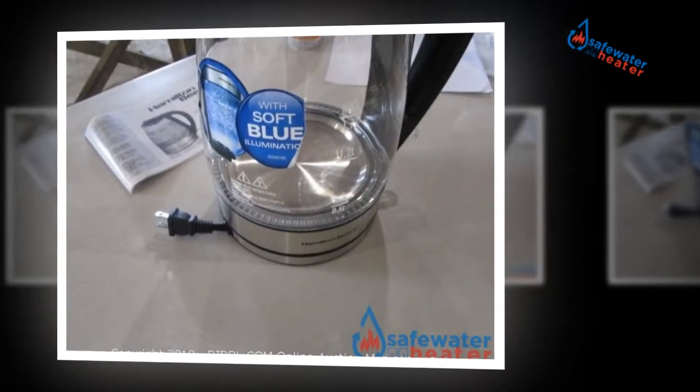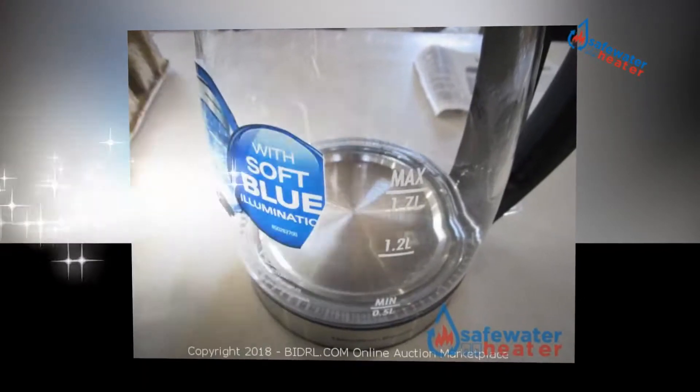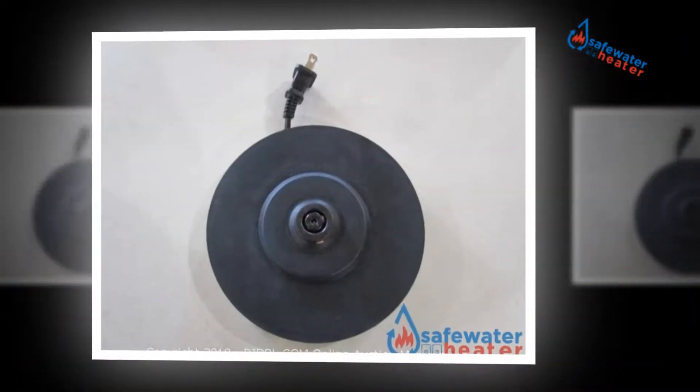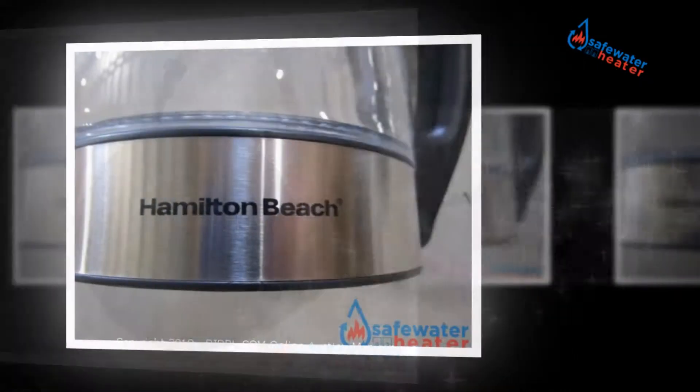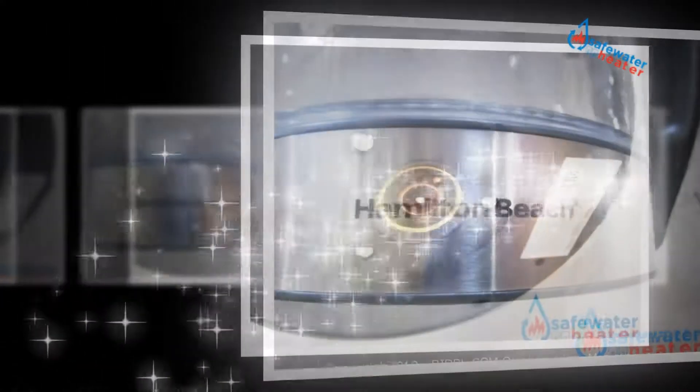The shortage of storage space should not prevent you from enjoying the convenience of an electric kettle. With the 1 liter design of the Hamilton Beach small glass kettle, tea, coffee, hot chocolate, soups and more can be reached quickly and easily, without compromising available space.